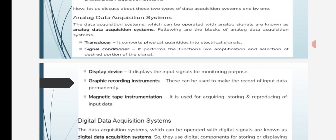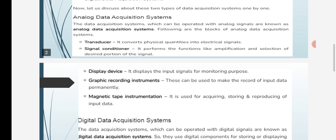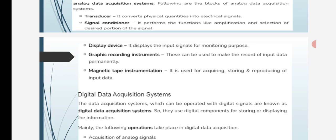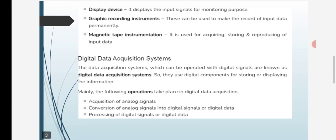Graphic recording instruments can be used to make a record of input data permanently. Magnetic tape instrumentation is used for acquiring, storing, and reproducing input data.